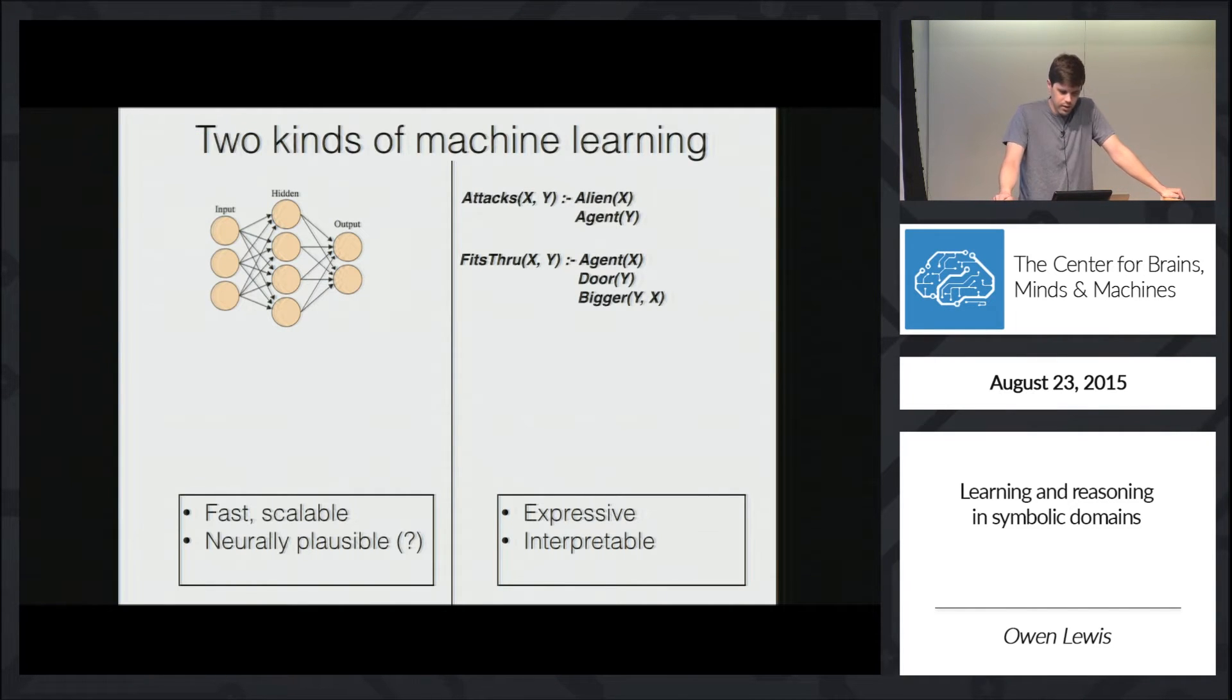OK, so we talked yesterday about some of the advantages and shortcomings of deep neural networks for complex behavioral tasks. And in particular, Josh and others pointed out that at least as currently designed, these networks don't find the sort of rich structured representations that people seem to use.